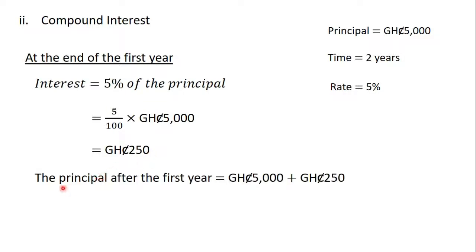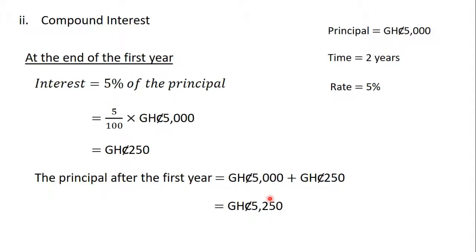This means that the principal after the first year — that is, the new principal, or the amount of money in the account after the first year — is going to be the initial principal of five thousand Ghana cedis plus the interest of two hundred and fifty Ghana cedis. So after the first year, the new principal is five thousand two hundred and fifty Ghana cedis.